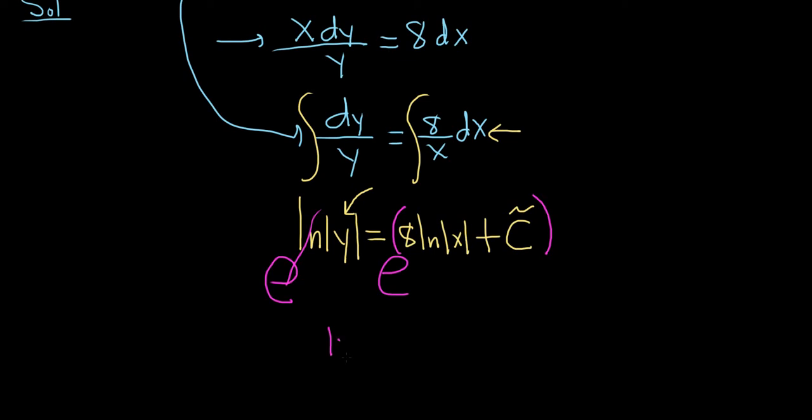so we get the absolute value of y is equal to, and this is equal to e to the 8 natural log, absolute value of x, times e to the c tilde.